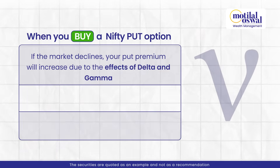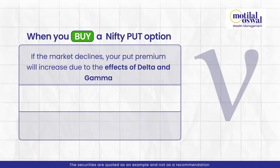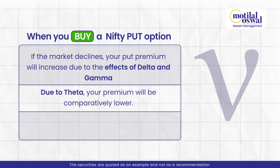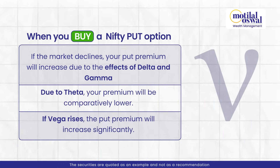If the market goes down, your put premium will increase because of Delta and Gamma, but because of Theta, your premium will move comparatively lower. But if Vega rises, your put premium will move significantly. So we need to understand how market movement works along with time to expiry and volatility — this is how option premium keeps changing day in, day out.